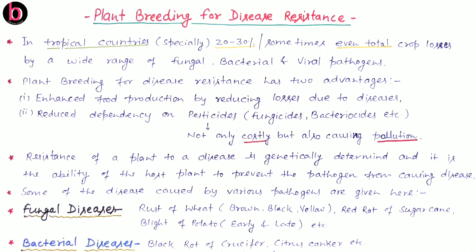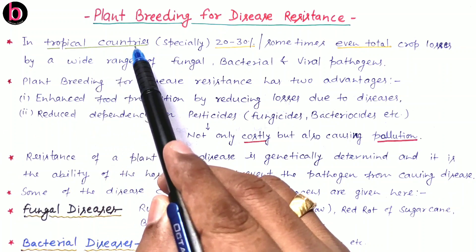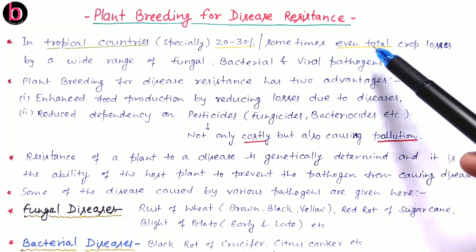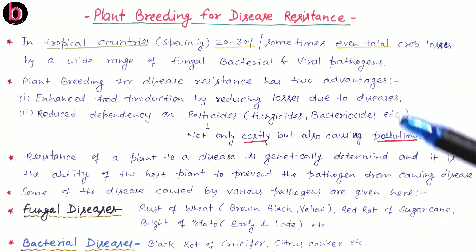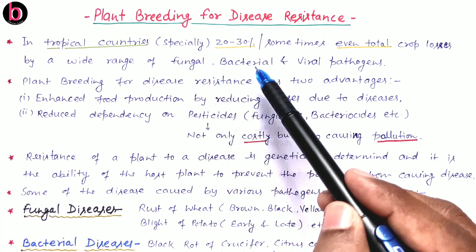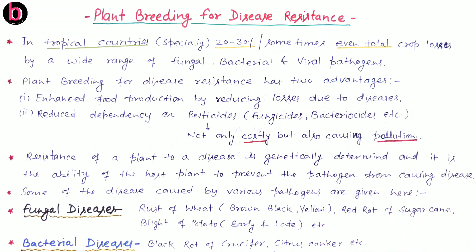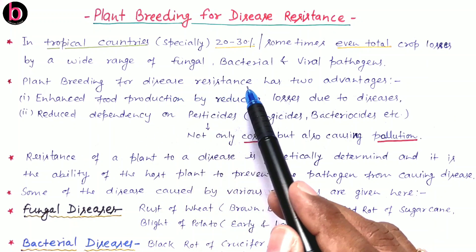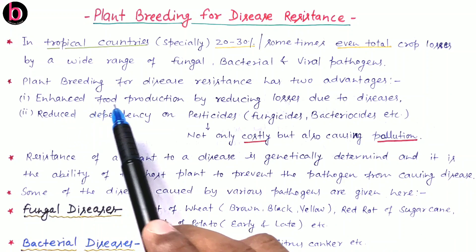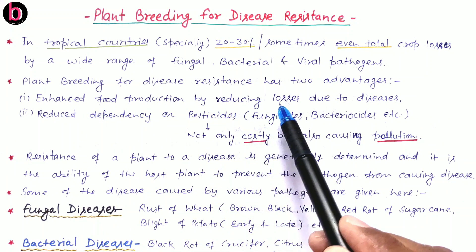Plant breeders are trying to grow plants which have disease resistance characteristics. In tropical countries especially, 20 to 30 percent or sometimes total — that is 100 percent — crop loss occurs because of a wide range of pathogens like fungal, bacterial, as well as viral. By plant breeding programs we have to produce disease-resistant varieties.